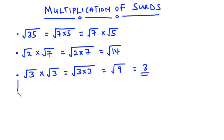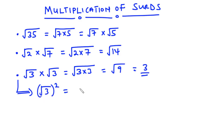For this same question, you can also say that the square root of 3 times the square root of 3 is equal to the square root of 3 squared. Now the square cancels the square root and then you have your answer to be 3. So whichever approach you use, you should arrive at the same answer.